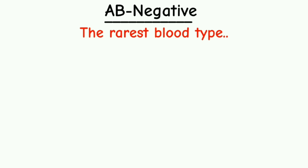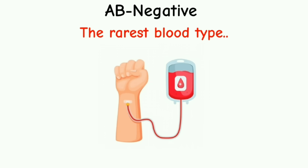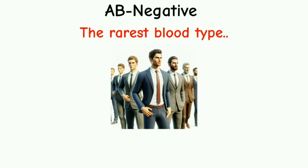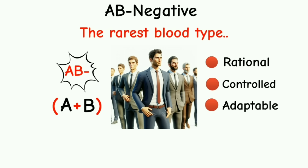AB negative. Type AB negative is the rarest of all the blood types with only 0.5% of the U.S. population having this type. AB individuals can receive red blood cells from A negative, B negative, AB negative, and O negative donors, and can donate red blood cells to AB positive and AB negative recipients. In various cultural and pseudoscientific theories, individuals with blood type AB negative are often described as having a mix of A and B personality traits. They are thought to be rational, controlled, adaptable, and empathetic.